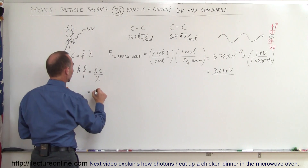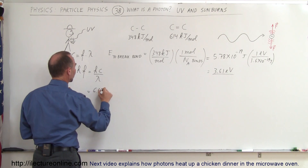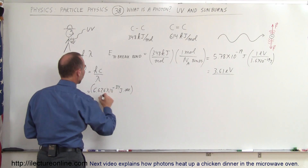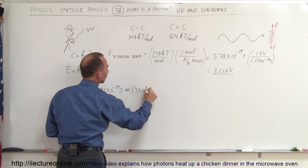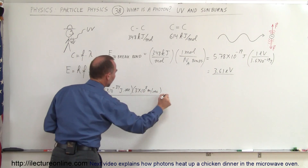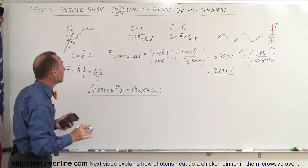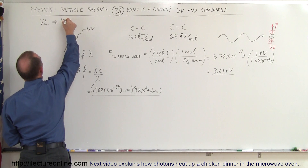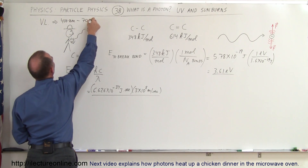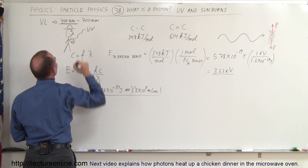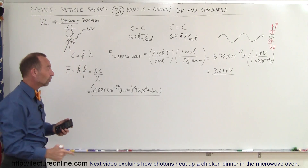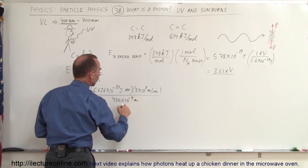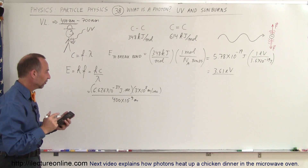Plugging in the numbers: Planck's constant is 6.626×10⁻³⁴ joule-seconds, the speed of light is 3×10⁸ meters per second, and we divide by the wavelength. Visible light has a wavelength anywhere from 400 to 700 nanometers. The most energetic visible light is the purple light at 400 nanometers, so let's plug in 400 nanometers — that's 400×10⁻⁹ meters.